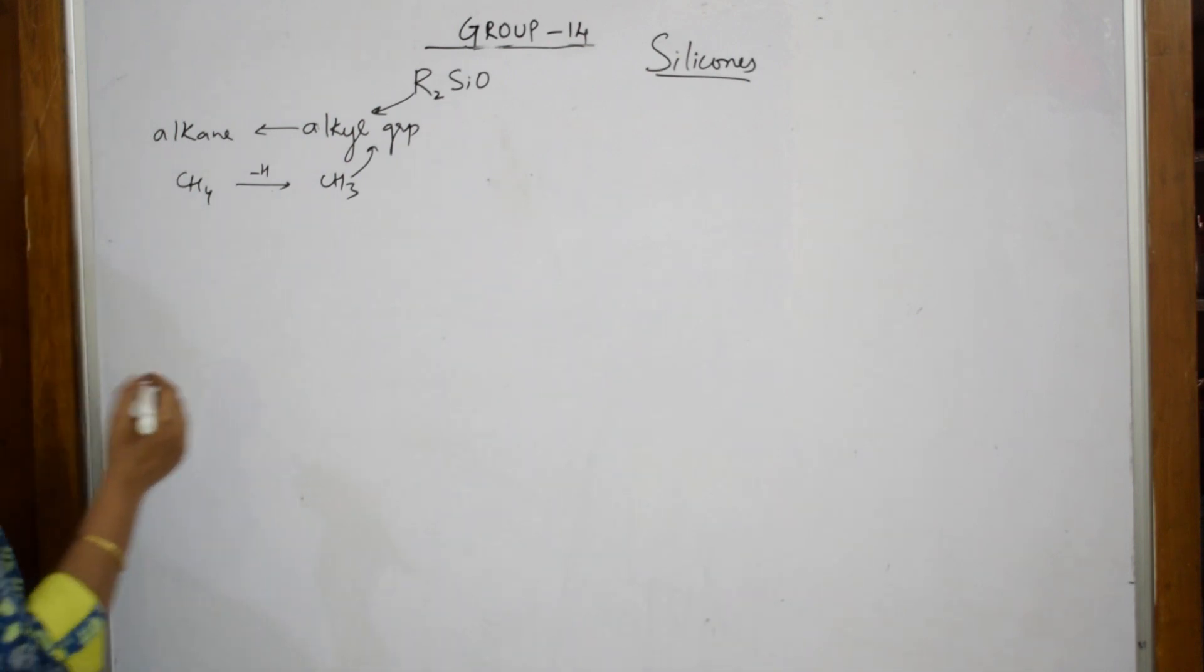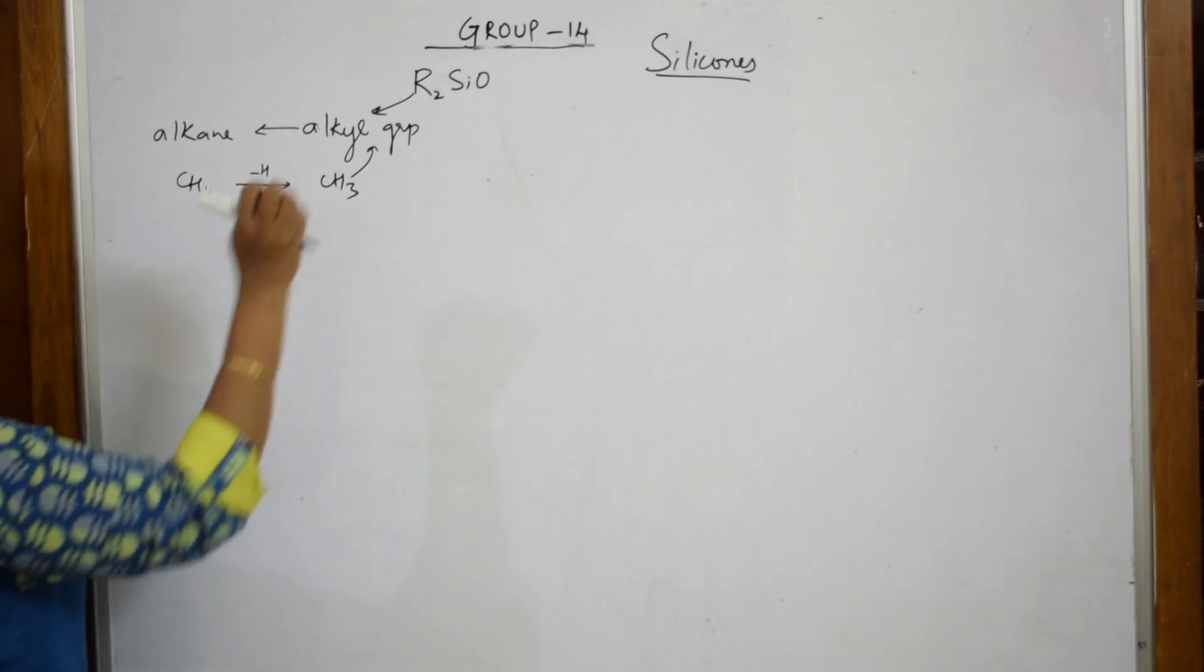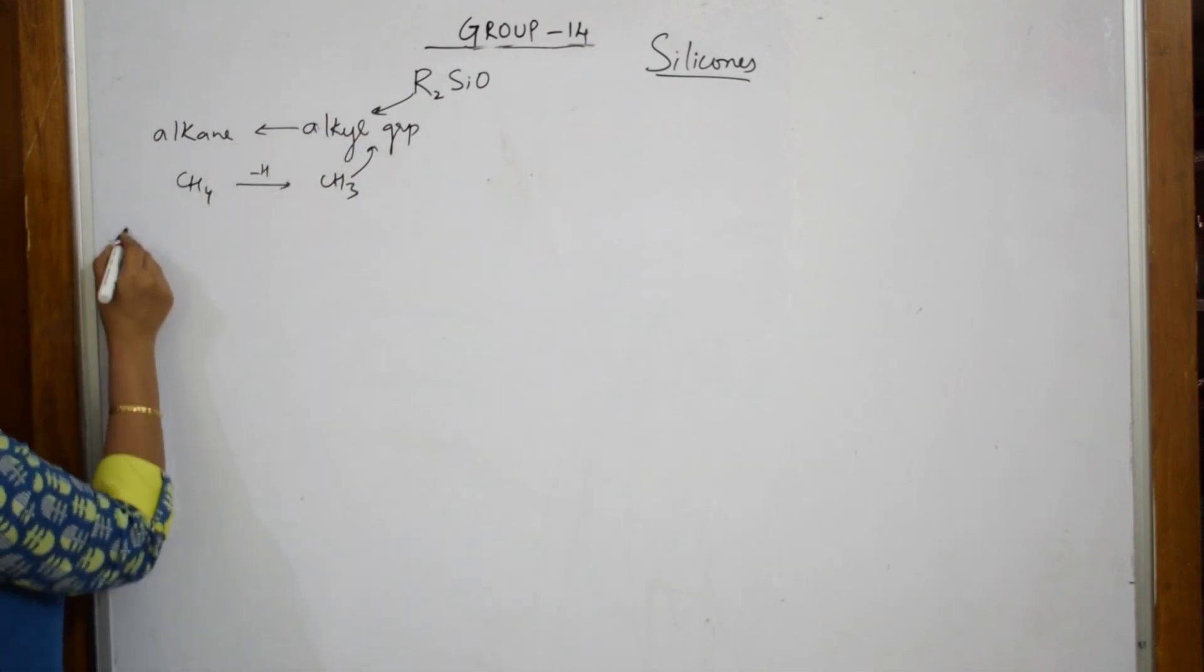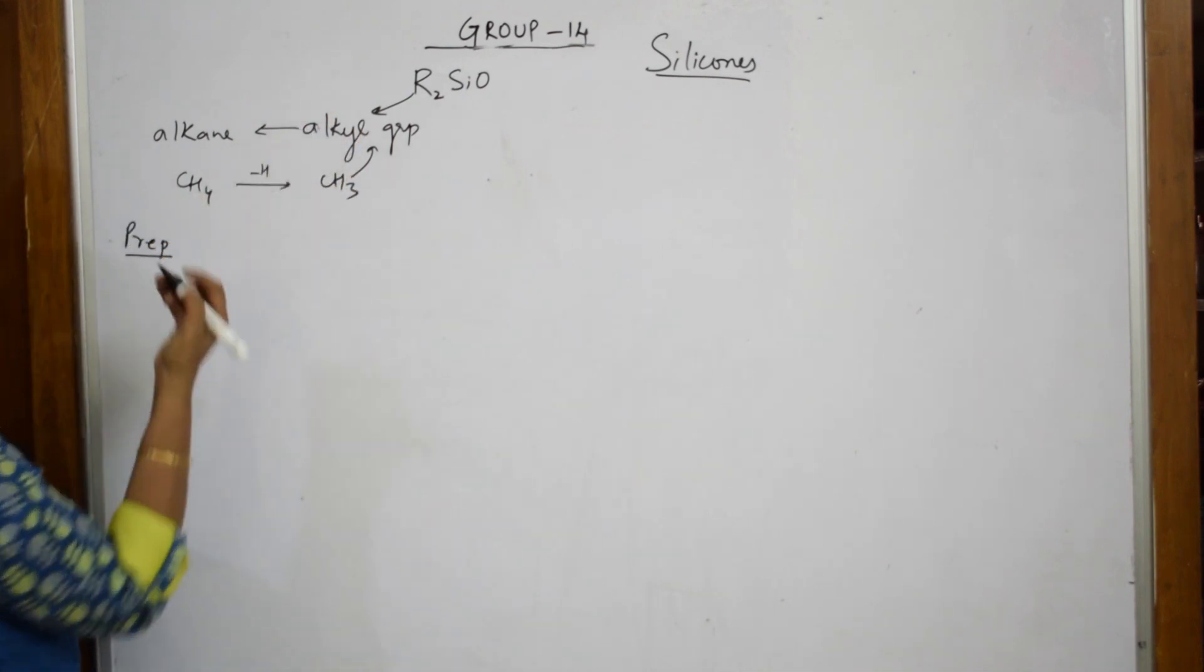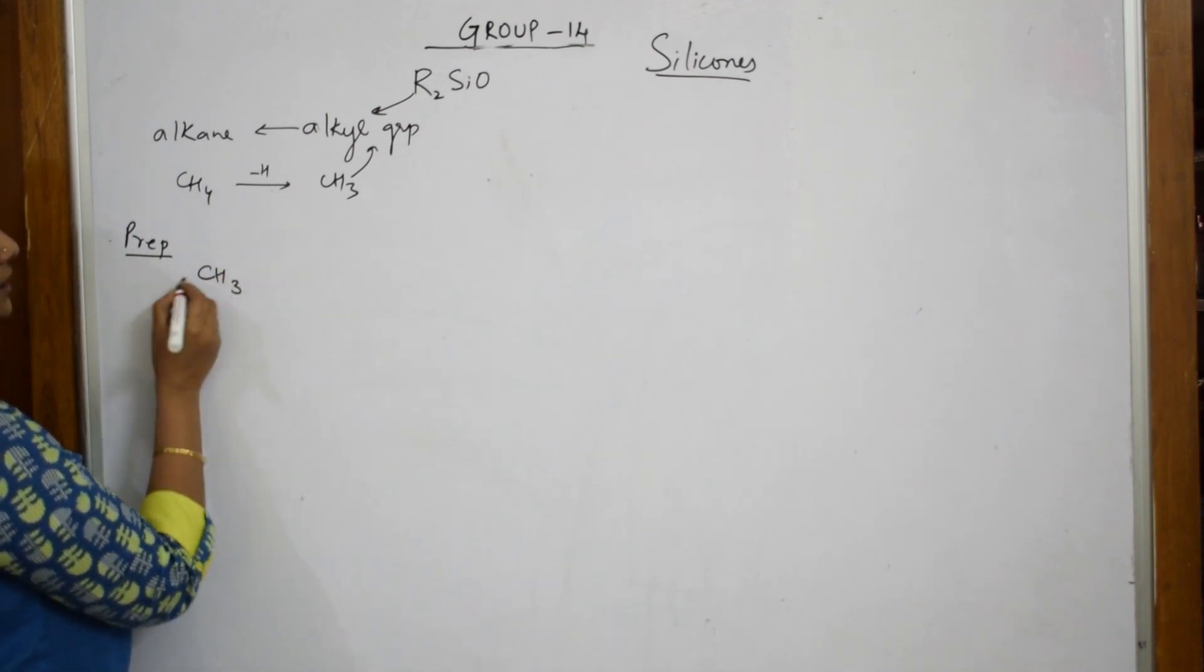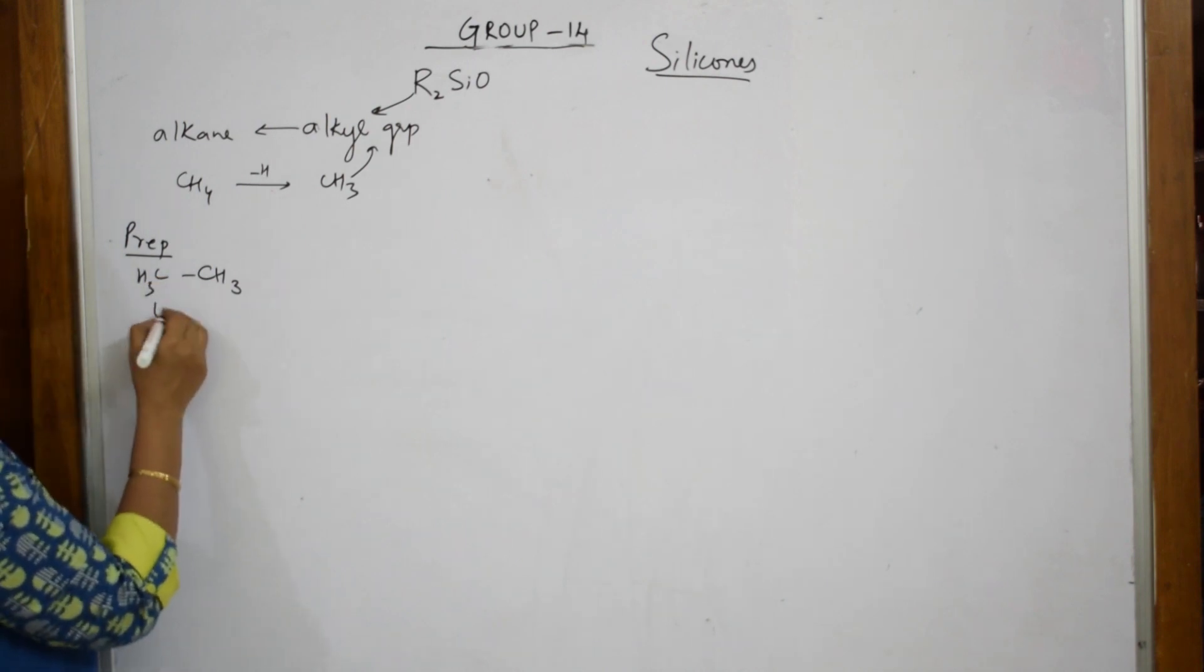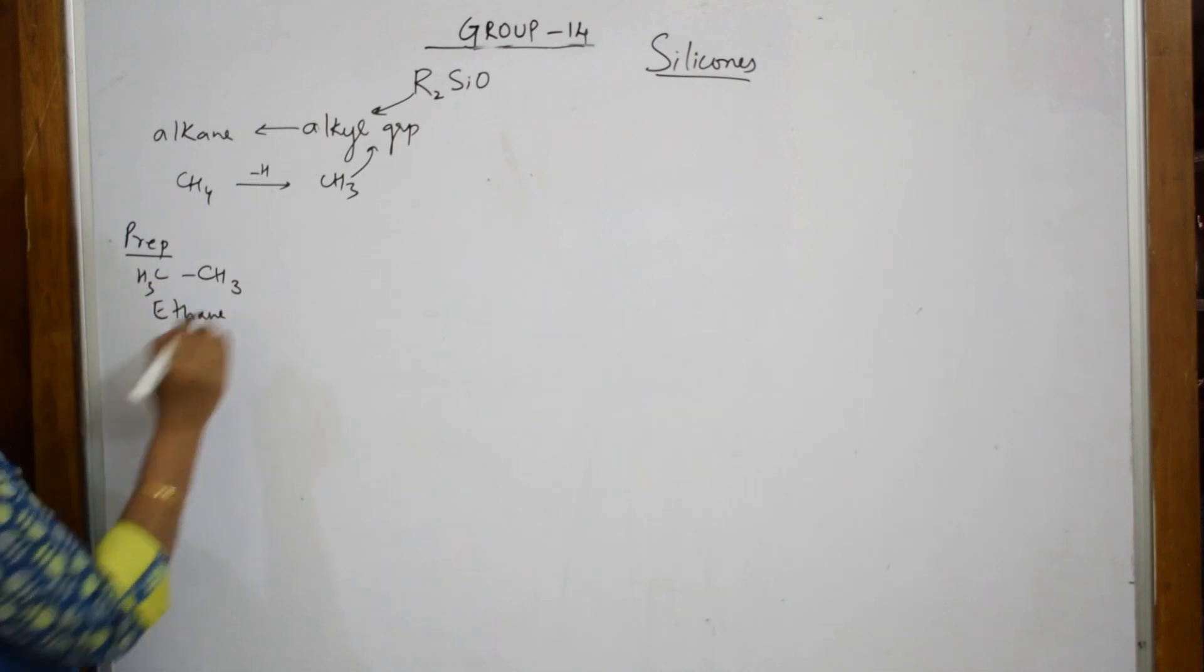So, when I take this alkyl for silicones to prepare, I have to prepare this. So, first you are going to take an alkane, as I said. Suppose if I have an alkane, what is this alkane? Two carbons, so it is ethane.